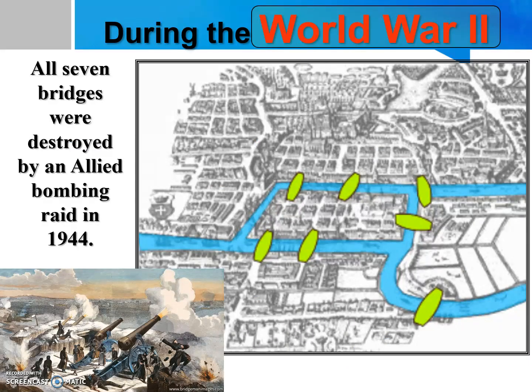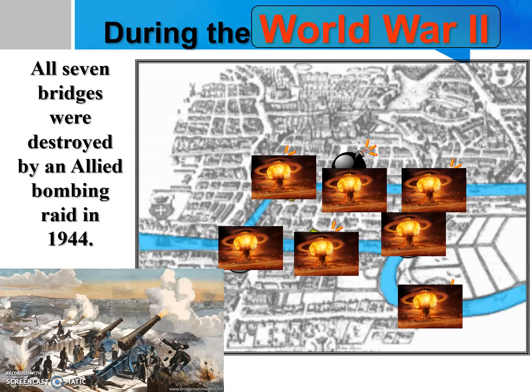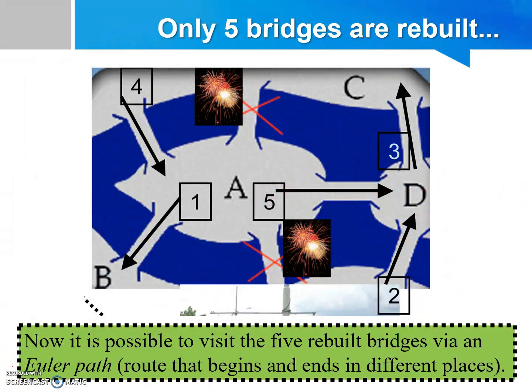However, during World War II, all 7 bridges were destroyed by an Allied bombing raid in 1944, and only 5 bridges were rebuilt. Now it is possible to visit the 5 rebuilt bridges via an Euler path.